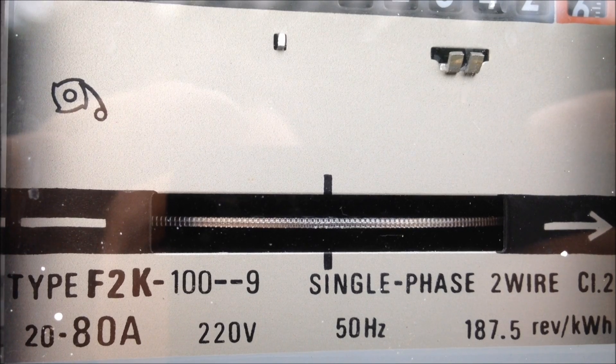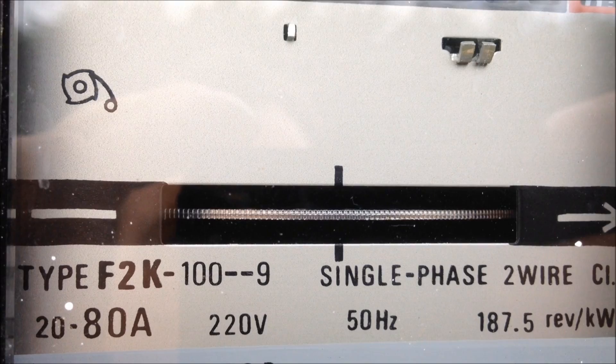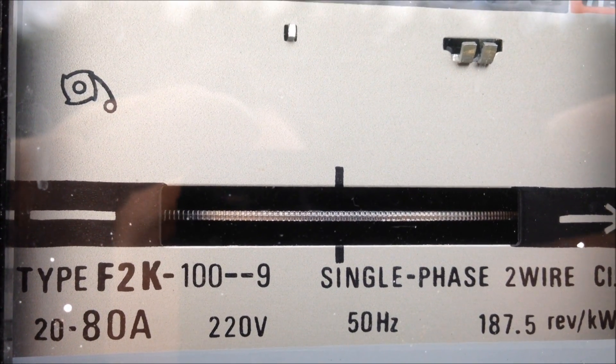That's the way your grid tie inverter should work. You want it moving just a small bit so you know you're not wasting 500 watts into the grid.